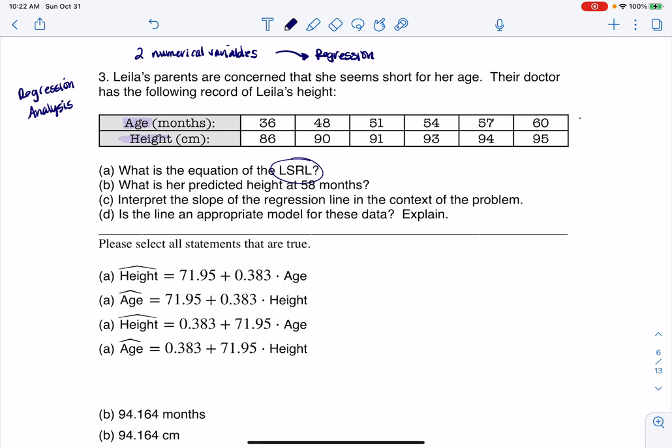So I'm going to put this variable in L1, this in L2, and I'm going to run stat, calc, and then we're going to go to 8, which is going to say linear regression A plus BX. And I'm going to feed it three pieces of information: L1, L2, and Y1. And then I'm just going to see what my calculator pops back and we'll figure out which of these options are the correct answer.